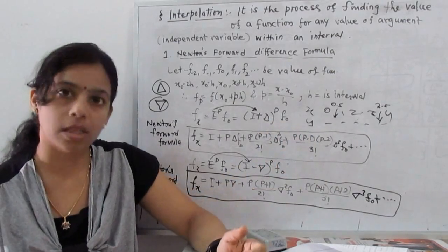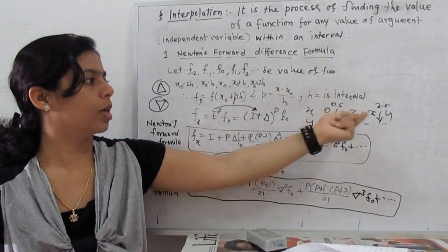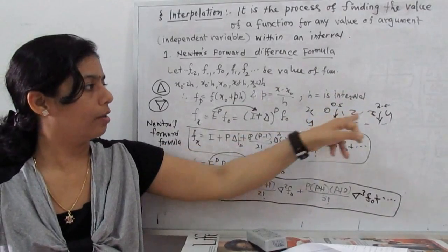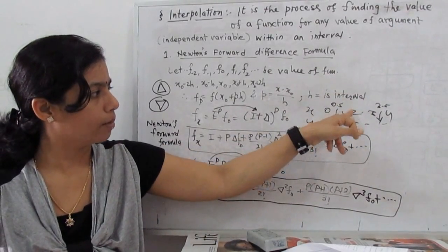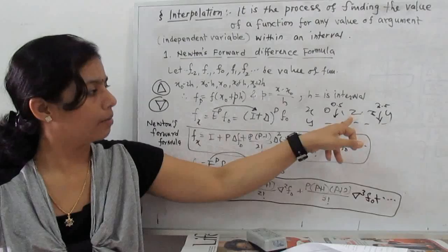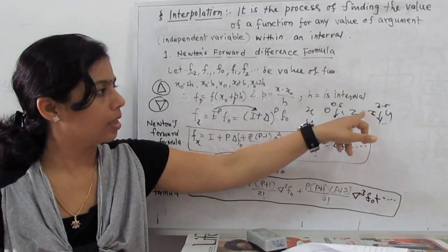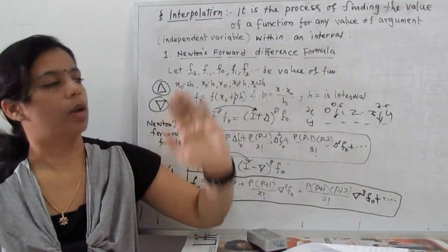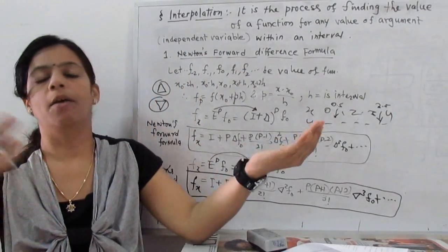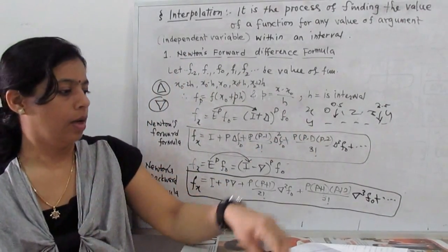For central entries, there is also a central difference formula. If the point is somewhere in the middle — say between 1 and 2, we can use the forward formula; between 2 and 3, we can use any formula. To summarize: for beginning entries use the forward formula, for ending entries use the backward formula, and for central entries either formula can be used.